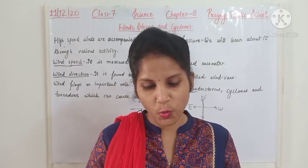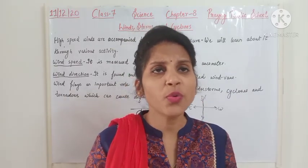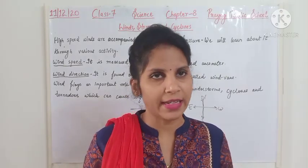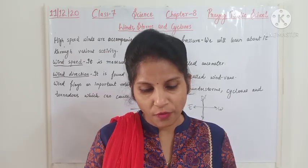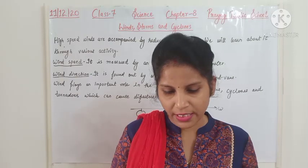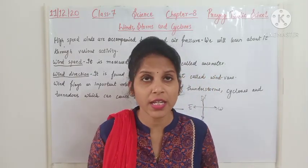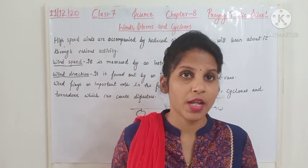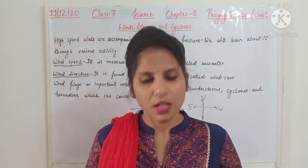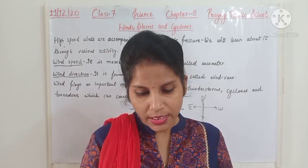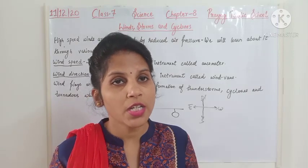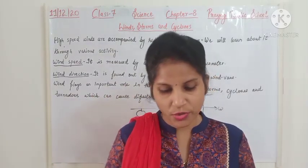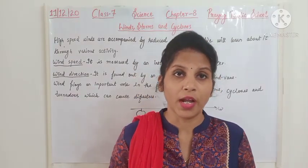First, a storm is a period of violent weather with strong winds and usually rain. Second, lightning is a natural flow of high voltage electricity within a cloud which appears as a bright flash of light in the sky. Third, thunder is the loud sound which is heard a little after a lightning flash is seen in the sky. Thunder is produced by lightning.